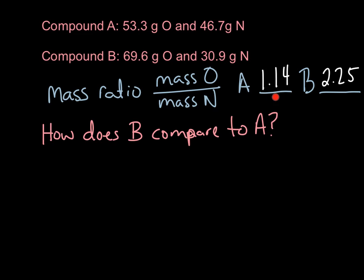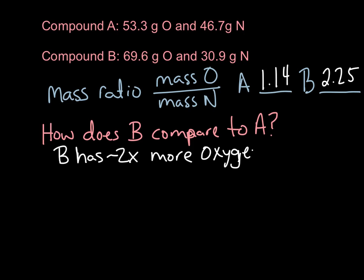I plugged those into my calculator, and for A I got 1.14, and for B I got 2.25. So we want to know: how does B compare to A? B is definitely bigger than A — it's right around 2 times bigger. So B has about 2 times more oxygen than A. This factor is saying 1.14 grams of oxygen for every 1 gram of nitrogen, and 2.25 grams of oxygen for every 1 gram of nitrogen.